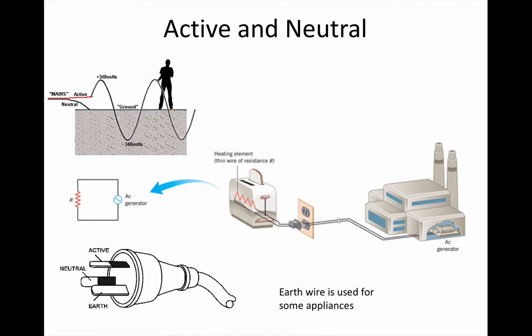Every device gets connected between active and neutral, and that means that the current in those devices washes back and forth, up and down, 50 times a second.